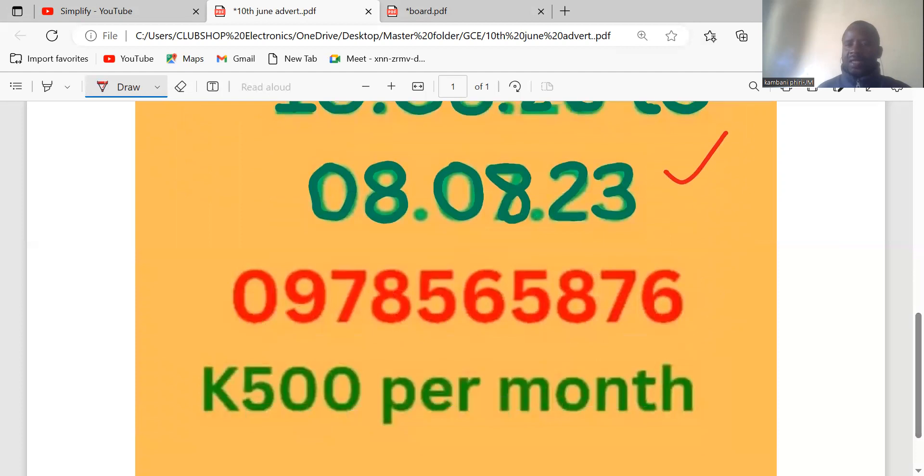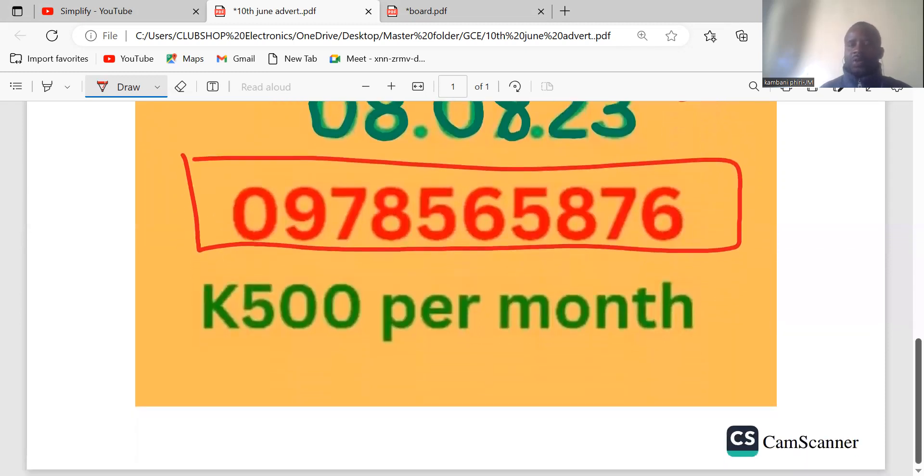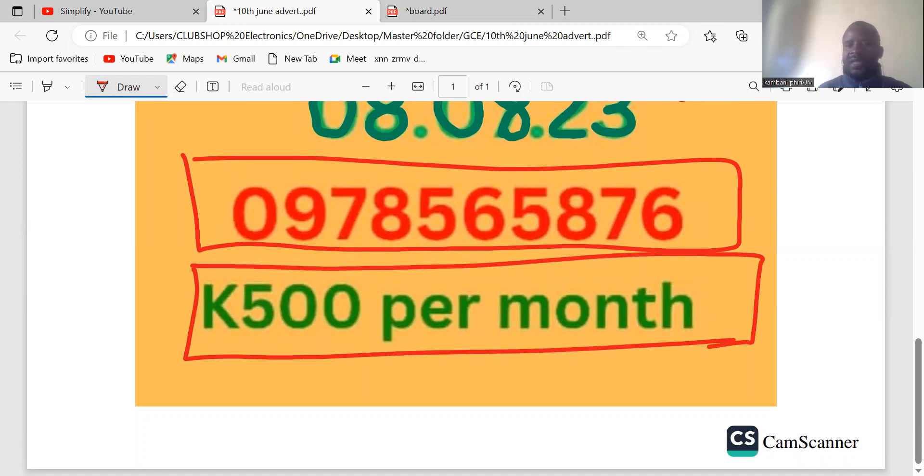You can contact us on this number, 0978-56-5876. You can contribute 500 kwacha per month towards this program, so that we are able to run and conduct this program successfully without any challenges. So meaning that since it's run for two months, you can start away with a thousand kwacha, but we are not saying you pay the whole 1,000 at once, you can split it, pay 500, pay 500.